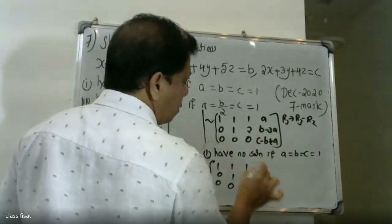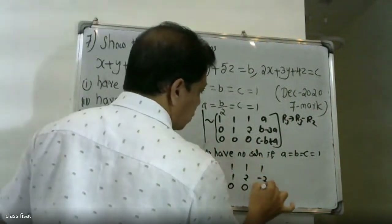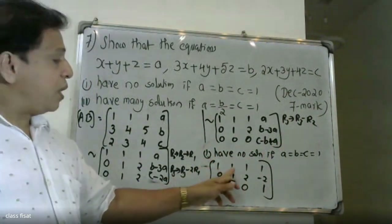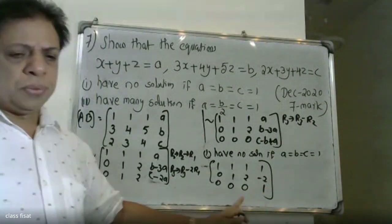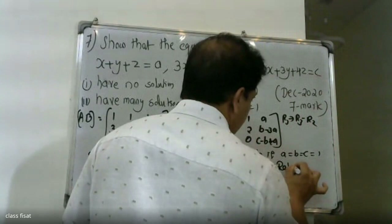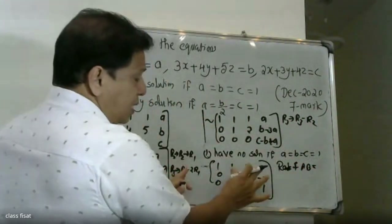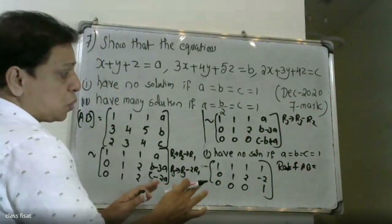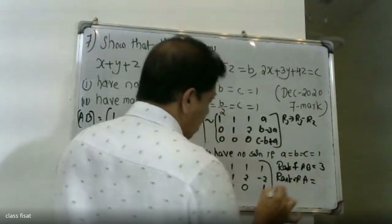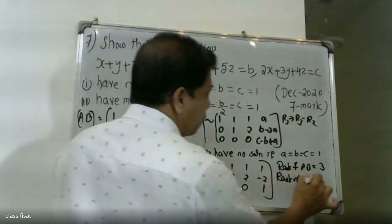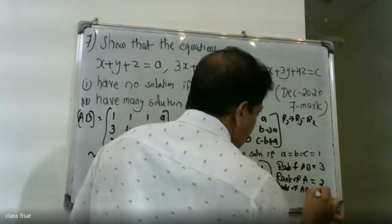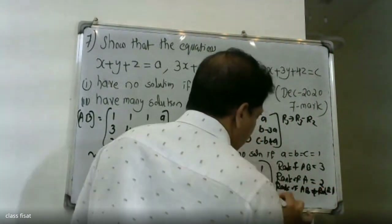If a equals b equals c equals 1, substituting into the matrix gives the last row as: 0, 0, 0, 1. The rank of A is not equal to the rank of the augmented matrix AB. Therefore, no solution.